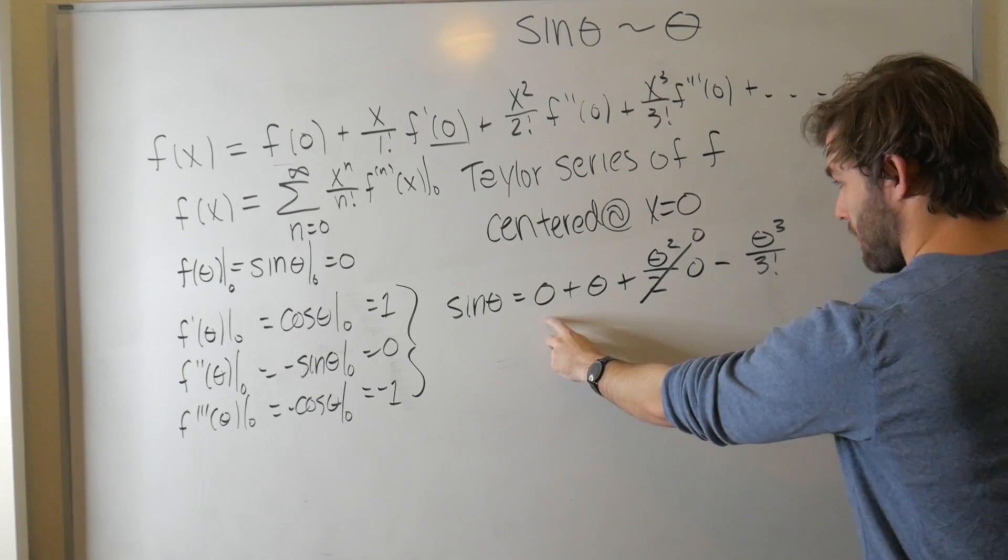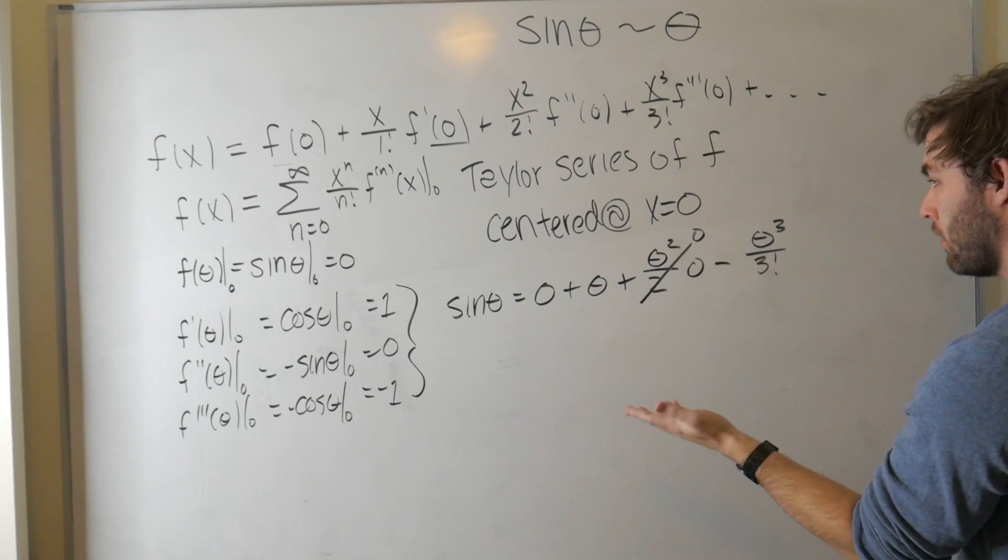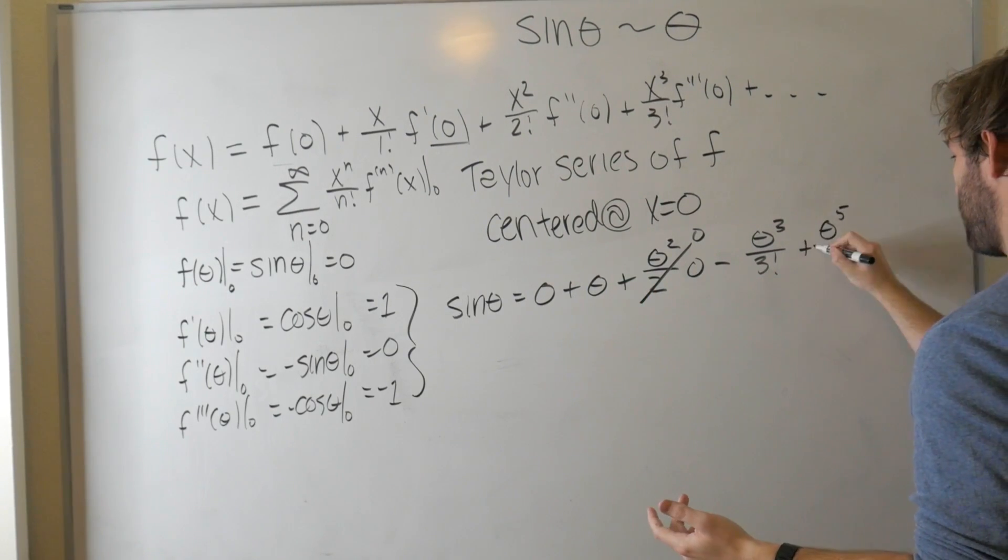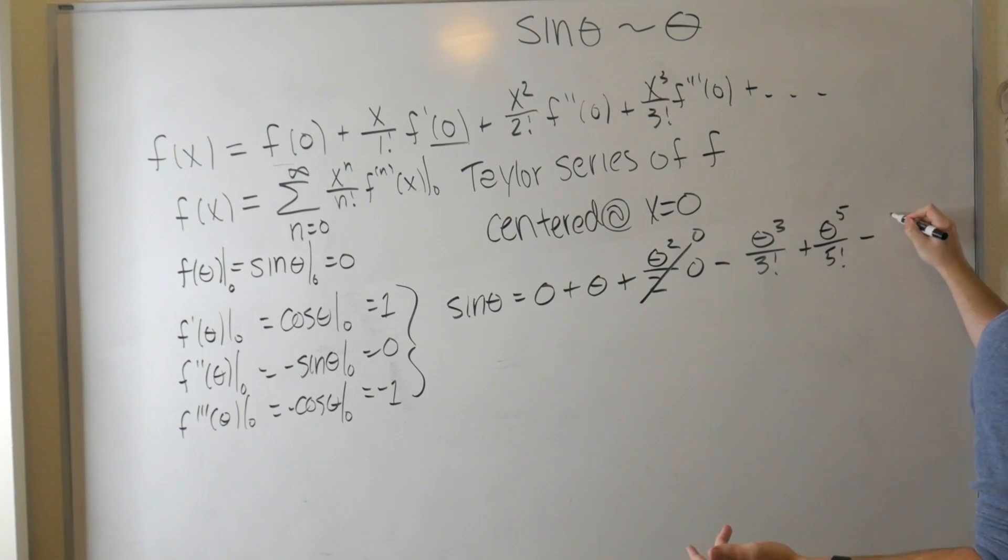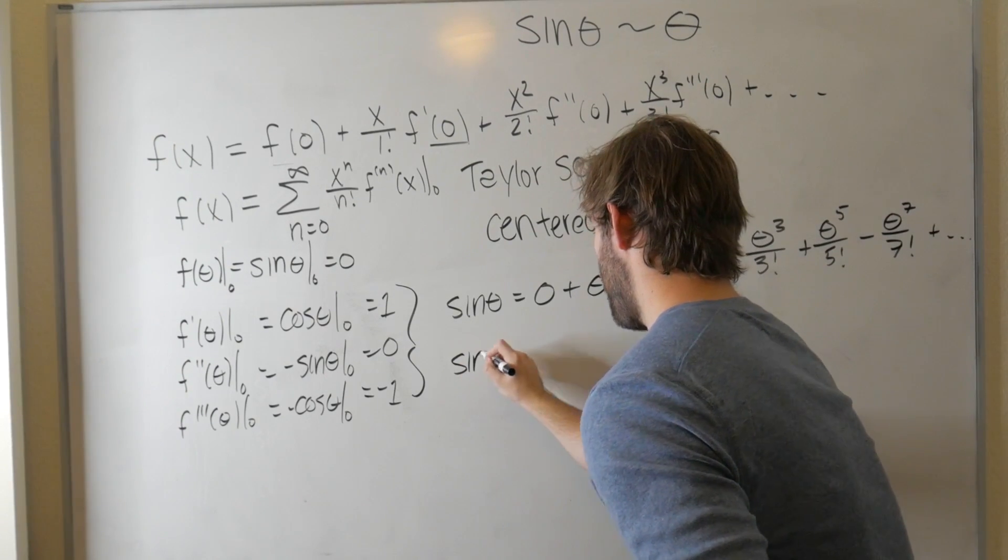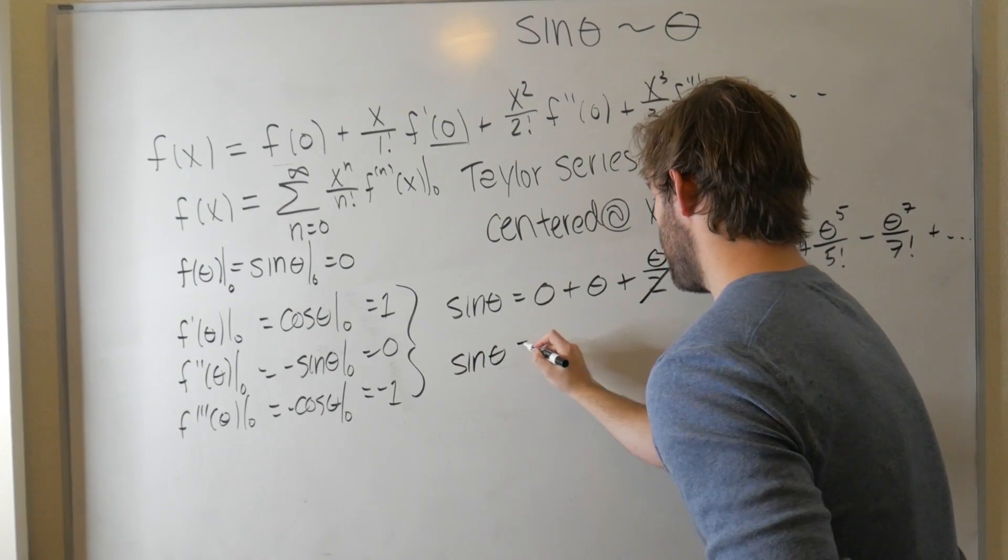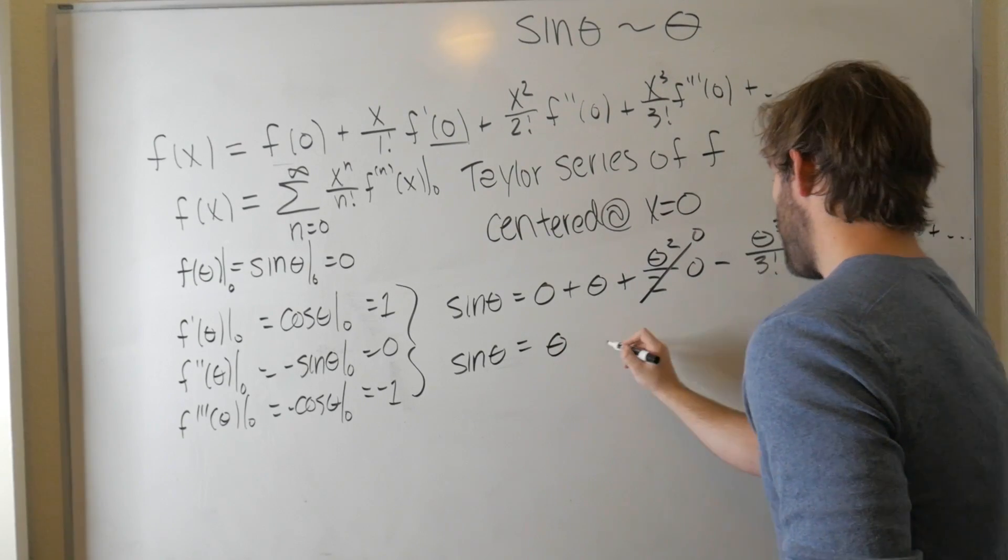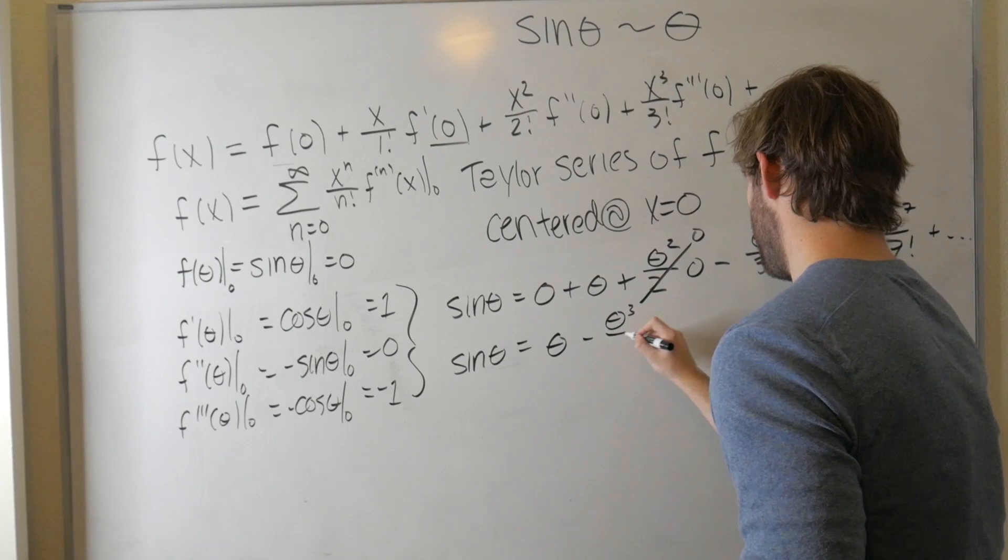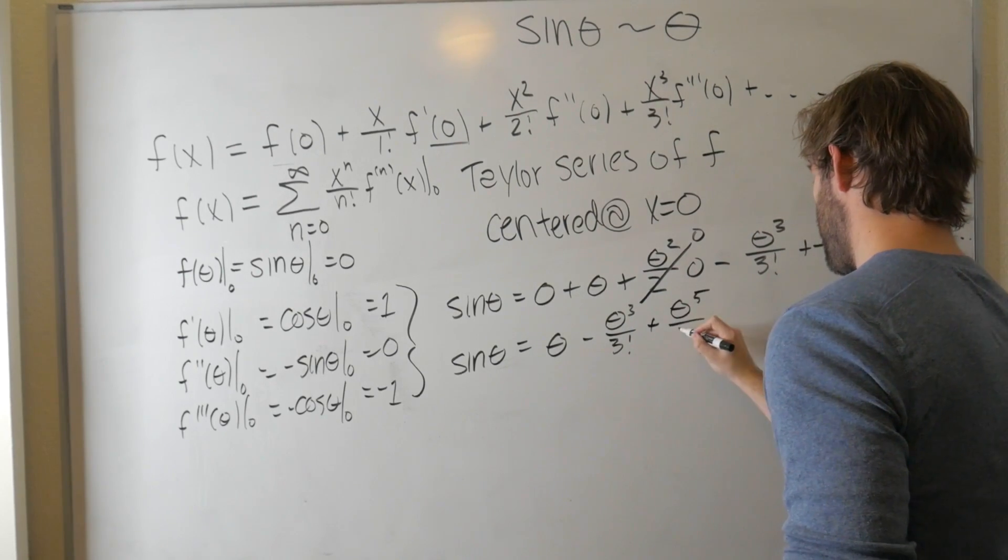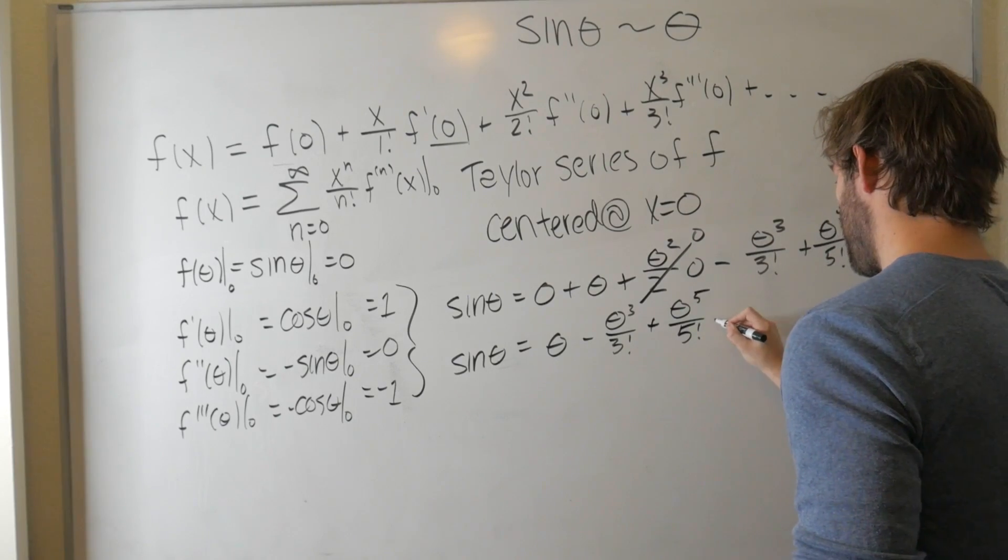So sine of theta equals zero plus theta times one, so it's just theta, plus theta squared over two times zero, plus theta cubed over three factorial times minus one. And you can see a pattern here. The even terms go to zero and the odd terms alternate signs. So the next one would be theta to the fifth over five factorial minus theta to the seventh over seven factorial.